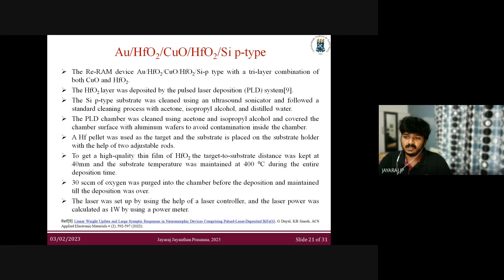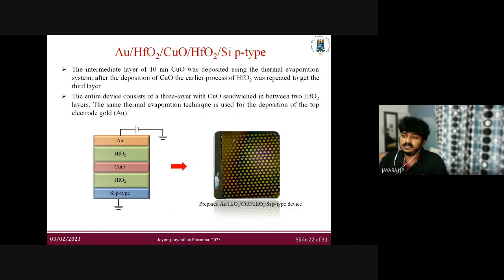To obtain high quality hafnium oxide, the target-to-substrate distance was maintained at 40 mm. The deposition temperature was 400°C, and 30 sccm of oxygen was passed into the chamber before deposition and maintained throughout. A laser power of 1 watt was used. The hafnium oxide layers were fabricated with the PLD system and the copper oxide layer was fabricated by thermal evaporation, with copper oxide thickness maintained at 10 nanometers.